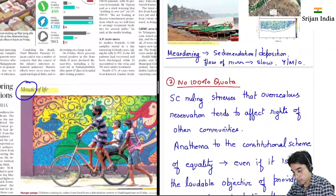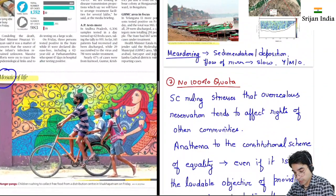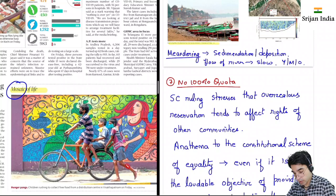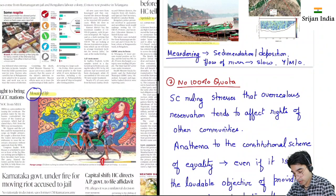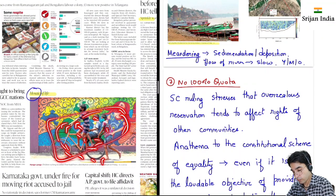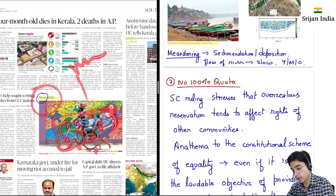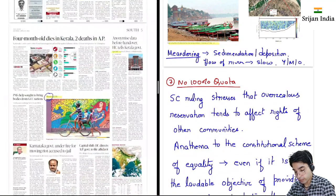Then this is mosaic — mosaic kya hota hai? Bahut saare ek jagah, ek wall pe ya phir aise pictures de diya hai, toh woh jo collective formation hota hai, that is called mosaic. So this is mosaic of life.